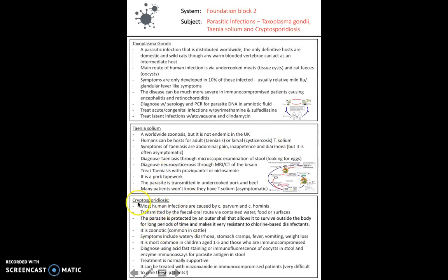Cryptosporidiosis: most human infections are caused by C. parvum and C. hominis. It's transmitted via the fecal-oral route through contaminated water, surfaces, or food. The parasite is protected by an outer shell, allowing it to survive outside the body for long periods and making it resistant to disinfectants. Symptoms include watery diarrhea, stomach cramps, fever, vomiting, and weight loss. It's most common in children aged 1 to 5 and immunocompromised individuals. Diagnosis uses acid-fast staining or immunofluorescence of oocysts in the stool. Treatment is normally supportive.